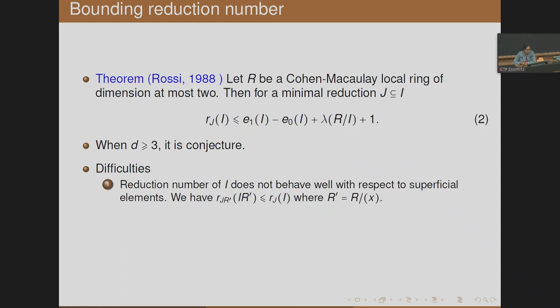Rossi proved that the reduction number with respect to a minimal reduction J is less than or equal to E_1(I) − E_0(I) + length of R mod I + 1. This is true only when the dimension is at most 2. For D ≥ 3, it is believed to be true — no counterexamples are known — but it remains an open problem.